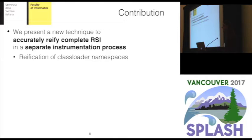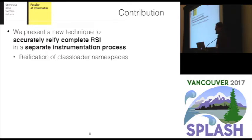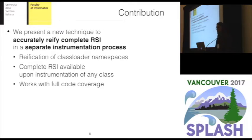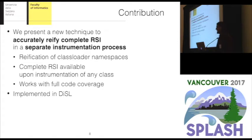In detail, in this paper we present a new technique to accurately provide complete reflective supertype information in a separate instrumentation process. In particular, we ensure that class loader namespaces are available in the instrumentation process, we guarantee that complete reflective supertype information is available when a class is going to be instrumented, and our approach works with full code coverage. We implemented our approach in the Diesel Java bytecode instrumentation framework.